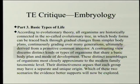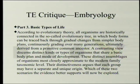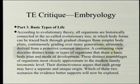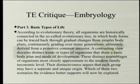Basic types of life: according to evolutionary theory, all organisms are historically connected in the evolutionary tree, in which body forms can be traced back through gradual changes from simpler body plans, ultimately derived from a primitive common ancestor. A contrasting view discerns distinct kinds or types of organisms that share a basic body plan and mode of development — most closely approximating the modern family taxonomic level — arguing each group may have a separate and unique origin. Which scenario the evidence better supports will now be explored.